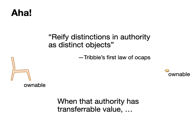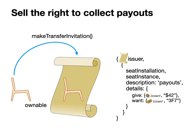In general, when distinct objects represent distinct authorities, we should ask: is the authority a valuable thing to have where the value itself is transferable? If the value is transferable, you should at least consider making the object into an ownable, which you can typically do compatibly in place. Making the seat into an ownable means you can sell the right to collect the payouts — Alice, having placed a bid in an auction, can sell her right to collect whatever those payouts are. This is what's known in finance as a conditional option.